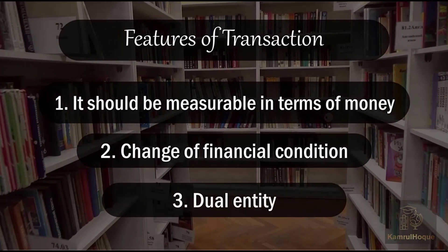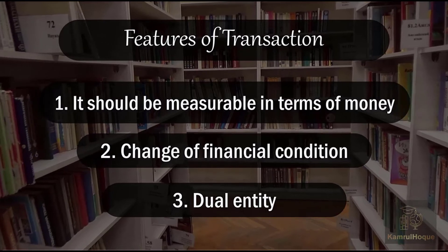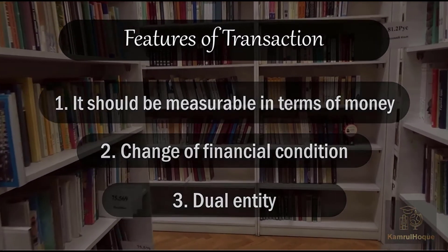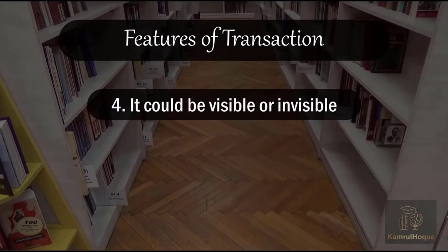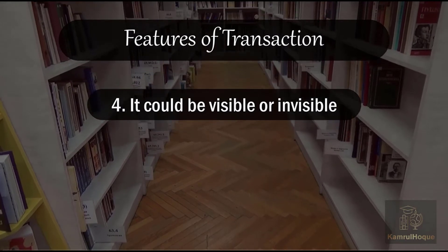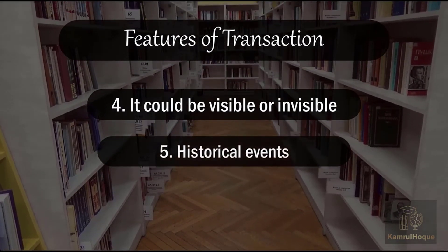Number three — dual entity. Every transaction must have a dual aspect: a debit side and a credit side. Number four — it could be visible or invisible. A visible transaction is like buying a column from the market. An invisible transaction is like depreciation of your mobile phone due to use — that is an invisible transaction.